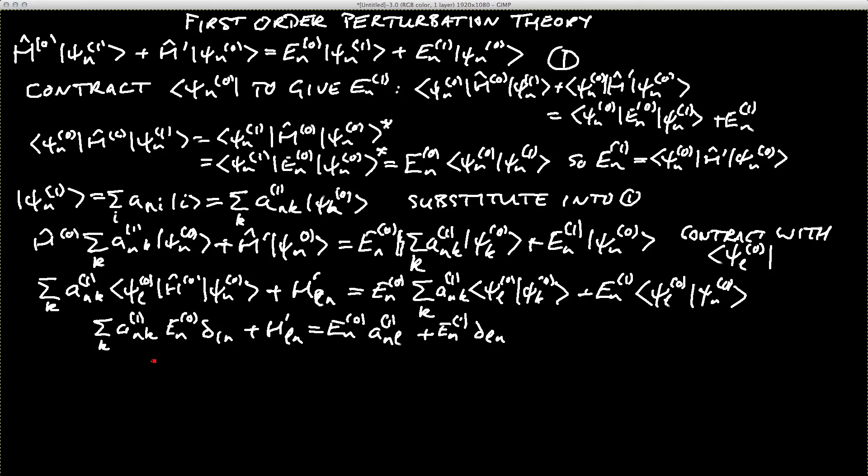We're almost there. So the final term that we need here is to do this sum on the first term on the left-hand side. Have I made a mistake here? Yes, I've made a mistake. So this should be a k, and this should be a k. So we're getting the sum of the first term on the left-hand side, and we're going to find that when k is equal to l, we get a result. So now we're going to see that we end up with El of 0 anl(1) plus h prime ln is equal to En of 0 anl(1) plus En of 1 delta ln.